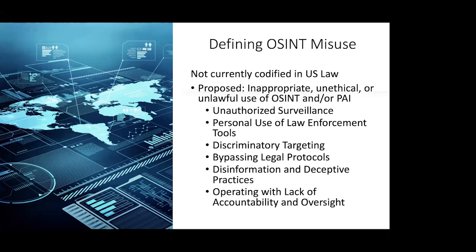This misuse can manifest itself in a variety of ways. Conducting surveillance or collecting data on groups without authorization. Using tools and resources for personal use — a great example seen often throughout the DOD is: do not use open source information to stalk your ex-girlfriend or ex-boyfriend. That is explicitly inappropriate use of that material. Discriminatory targeting — we'll see some examples of that in the case study. Using OSINT specifically to target demographics, communities, or groups based on race, ethnicity, or religion, rather than credible threats or public safety concerns.